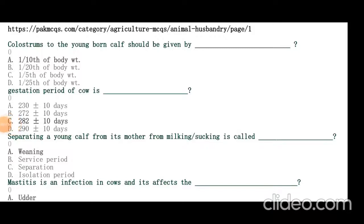Colostrum to the young born calf should be given by one-tenth of body weight. Gestation period of cow is 282 plus or minus 10 days, 9 months, 9 days.